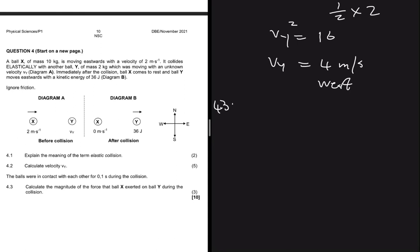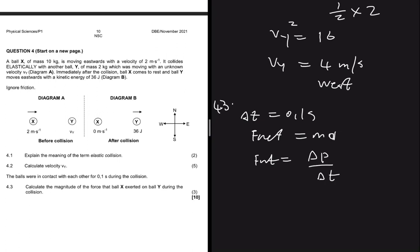Moving to question 4.3: the balls were in contact for 0.1 seconds, so delta T equals 0.1 seconds. We need to calculate the magnitude of the force that ball X exerted on ball Y. We cannot use F-net equals MA here because it's a momentum-based problem, so we use F-net equals delta P divided by delta T.